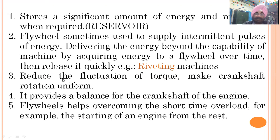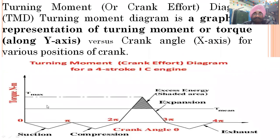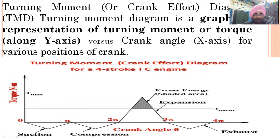Now what is the turning moment diagram? The turning moment diagram (TMD), also called the crank effort diagram, is a graphical representation of turning moment or torque on the y-axis versus crank angle on the x-axis for various positions of the crank. For a four-stroke engine, each stroke spans 180 degrees.